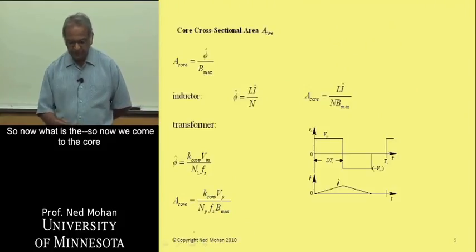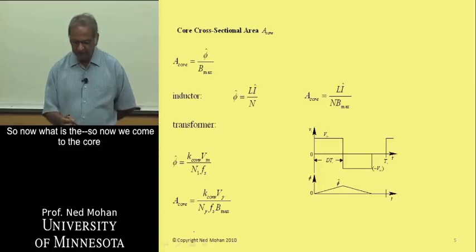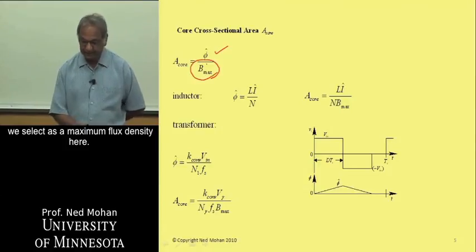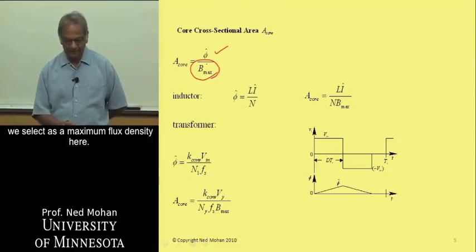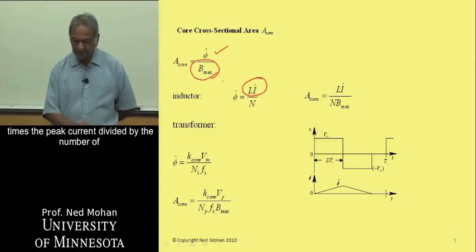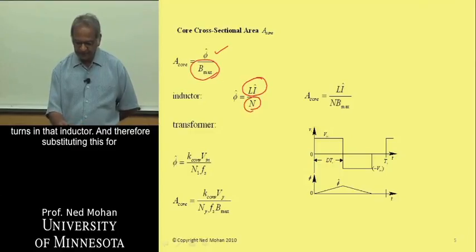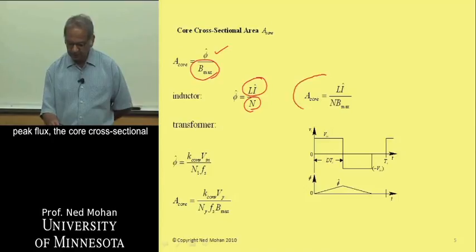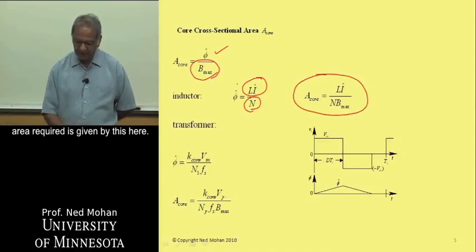Now we consider the core cross-sectional area. That is determined by the maximum flux the circuit will have, divided by whatever we select as the maximum flux density. For an inductor, the maximum flux is L times the peak current divided by the number of turns, and therefore, substituting for peak flux, the required core cross-sectional area is given by that expression.